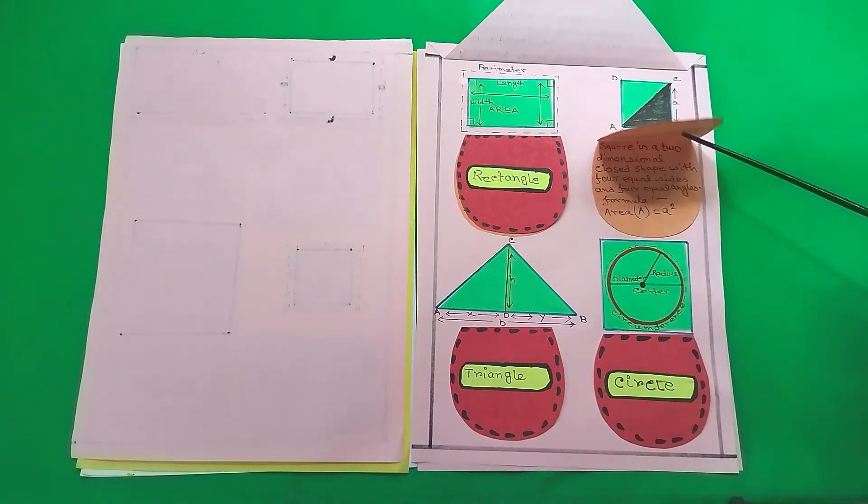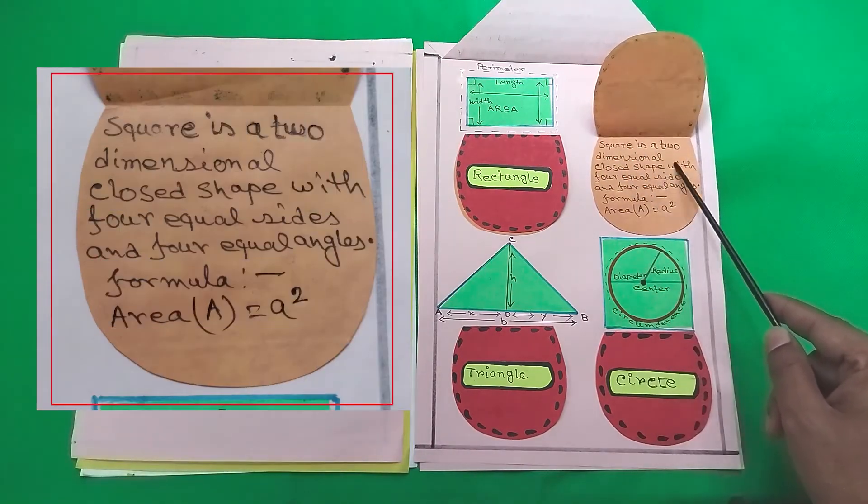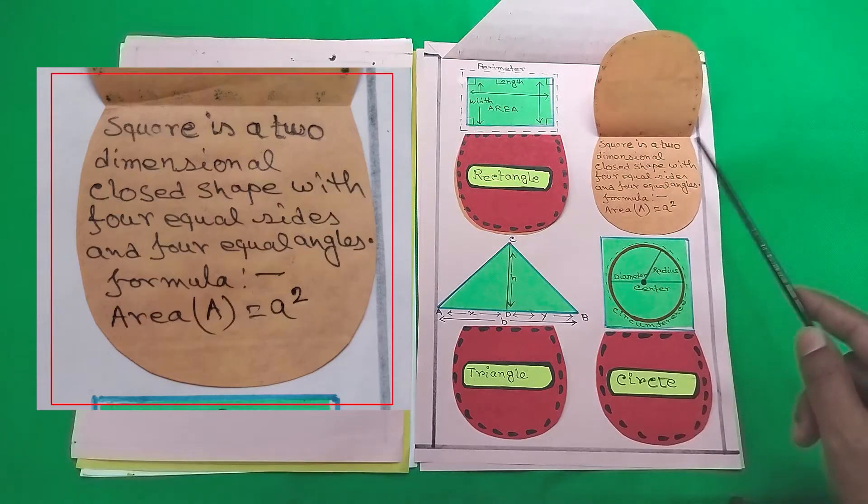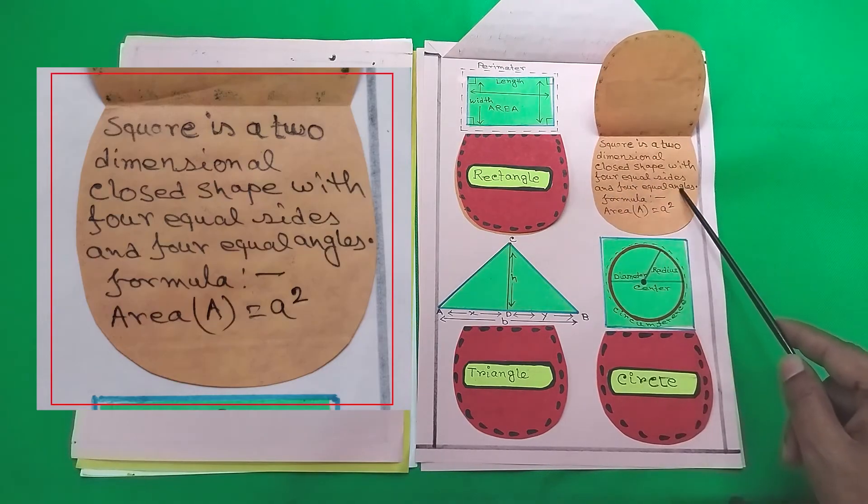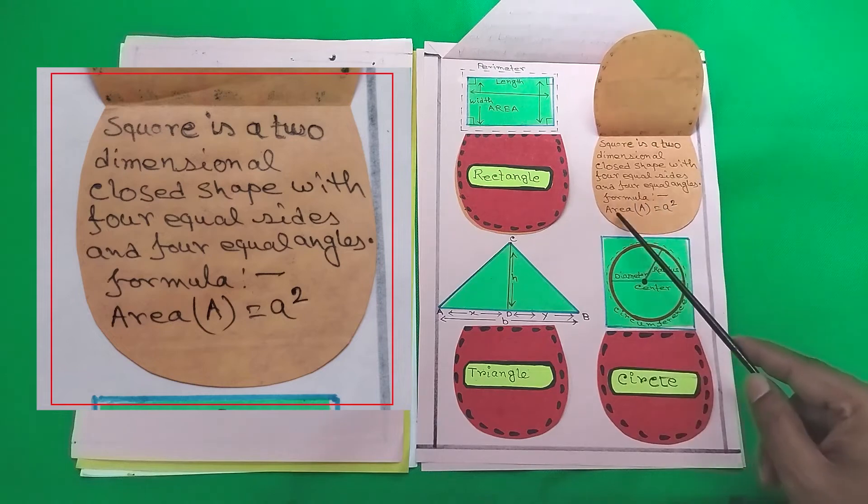So next we have the area of a square. Square is a two dimensional closed shape with four equal sides and four equal angles. The formula for it is area A equals A squared.